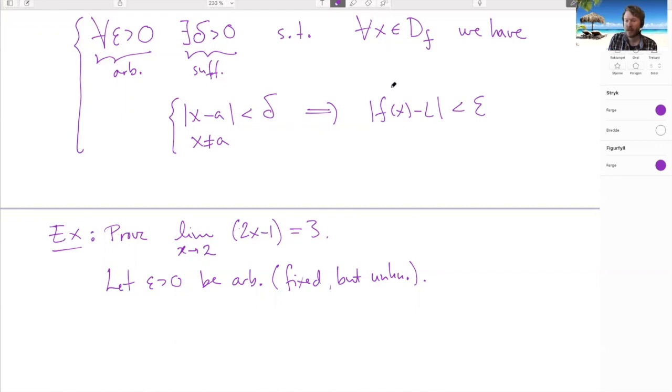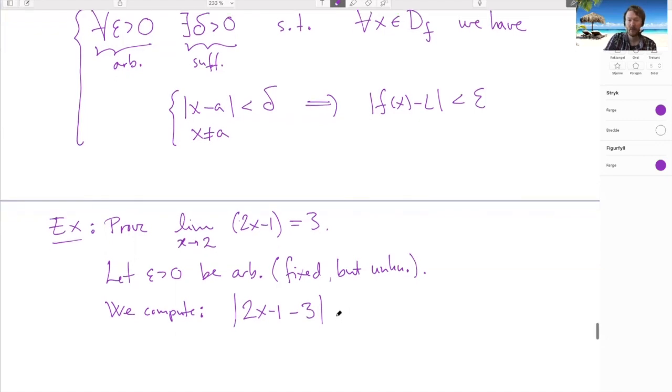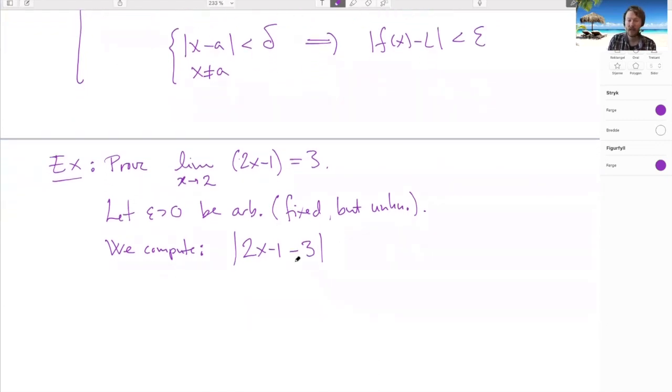And when we figure this out there will be a natural candidate for delta popping up. So we compute just as for these sequences. So f of x is now 2x minus 1. L is 3. And we want to get this less than epsilon. But just as for sequences we should think of this thing here in terms of some chain of equalities and inequalities. And we only insert epsilon at the very last stage. So we begin by simplifying. So we have now |2x - 4|.